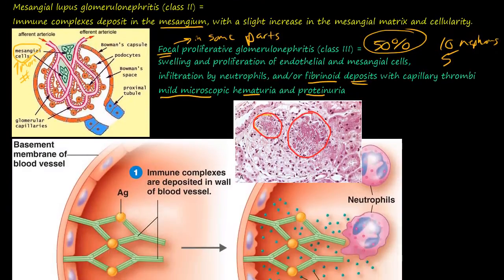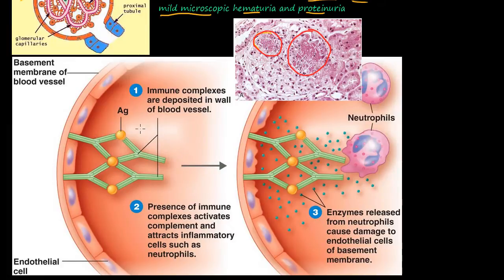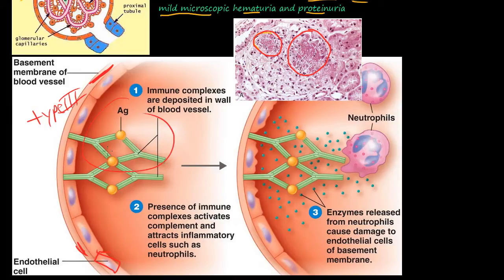As a reminder, what happens in this type 3 hypersensitivity: you have the basement membrane and then an endothelial cell in your blood vessel. These immune complexes gather and embed themselves into the wall. The presence of these immune complexes activates the complement, which attracts inflammatory cells such as neutrophils to the area.